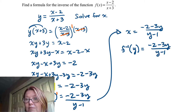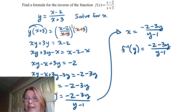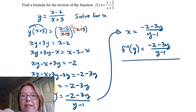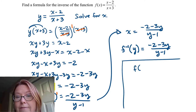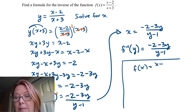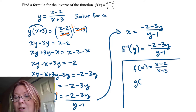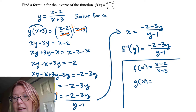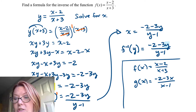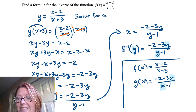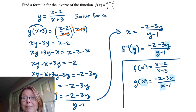Remember that if you want to graph both functions, you need them both in terms of the same variable with different names. So you might graph the original f(x) equals (x minus 2) over (x plus 3), and a new function g(x) equals (negative 2 minus 3x) over (x minus 1) — the same as the inverse we found, but written with x instead of y to get a common variable.